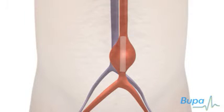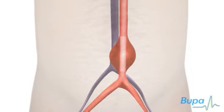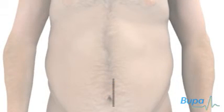The graft keeps the aorta open and the aneurysm will be protected from further pressure. The skin on the abdomen is closed with stitches.